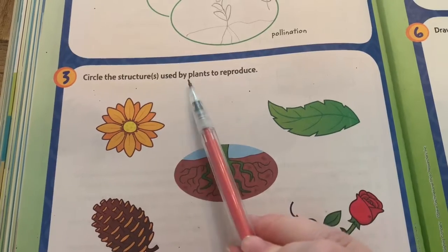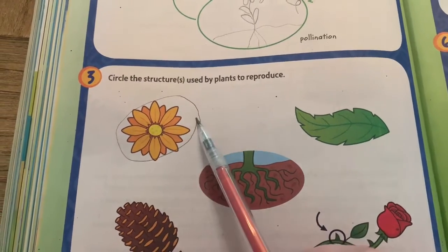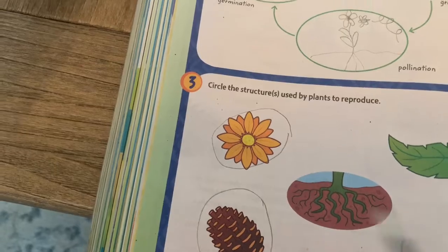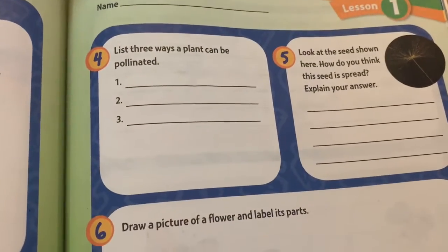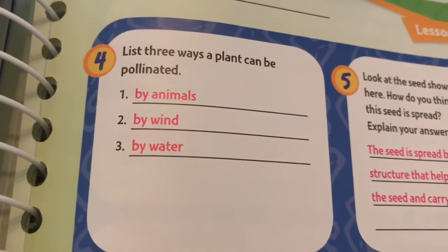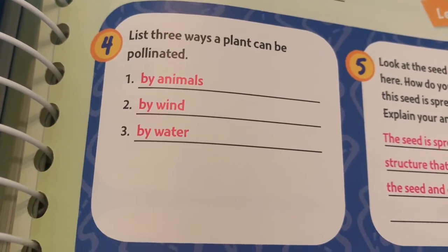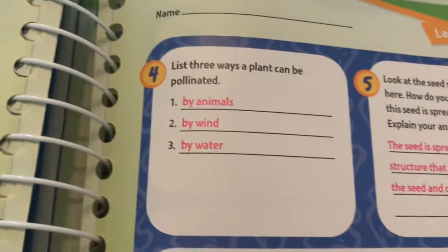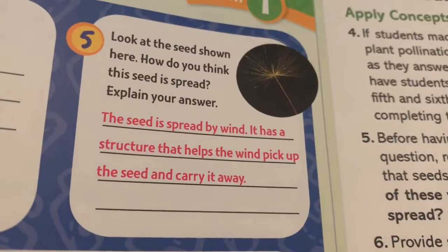Circle the structure used by plants to reproduce. Number four: list three ways that plants can be pollinated. If you look back in the text, we know that it can be pollinated by animals, by wind, or by water.